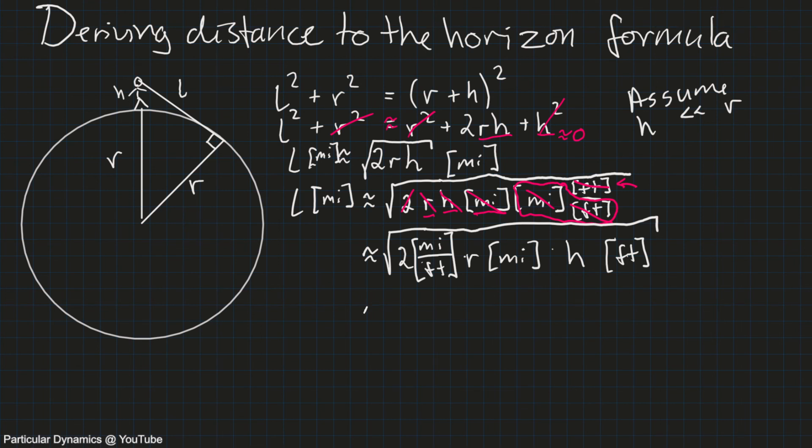And so putting in the factors that we do now, we have square root of 2, 1 over 5280 miles per foot. We have 3958.8 miles, that's the radius of the earth.